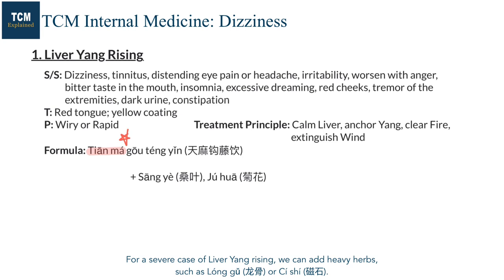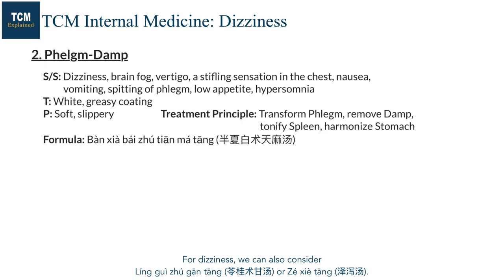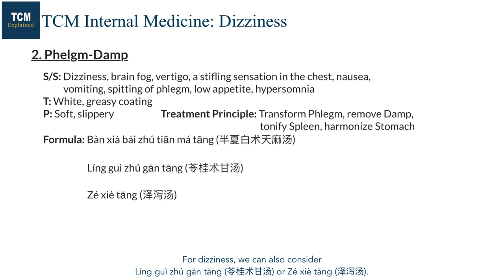For phlegm damp headache or dizziness, we can use Ban Xia Bai Zhu Tianma Tang. For dizziness, we can also consider Ling Gui Zhu Gan Tang or Zhe Xie Tang. For blood stasis, we use Tong Qiao Huo Xue Tang.